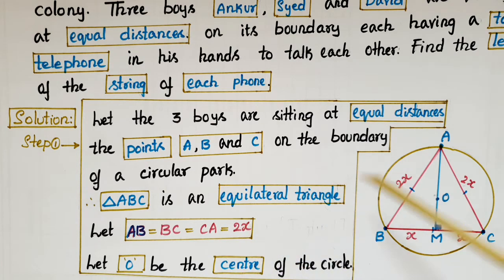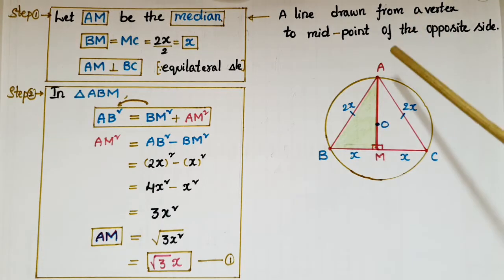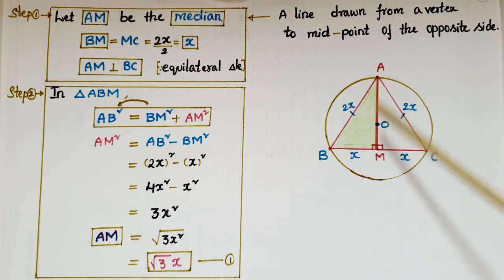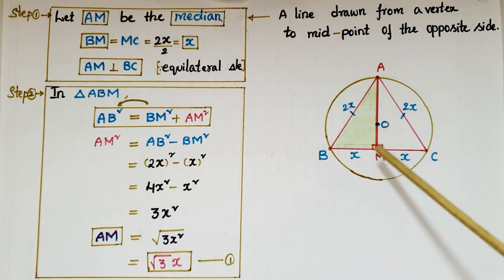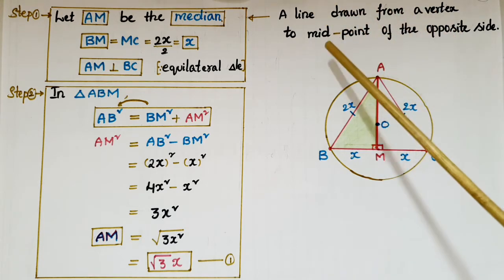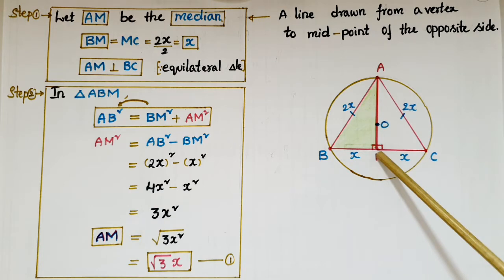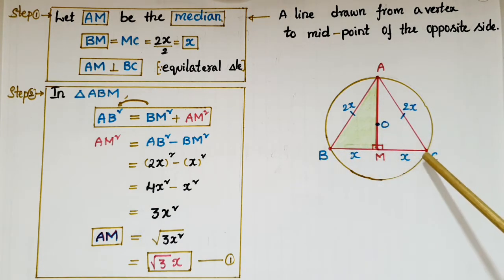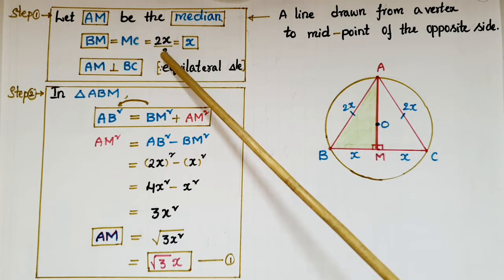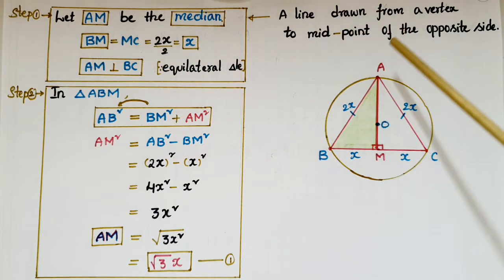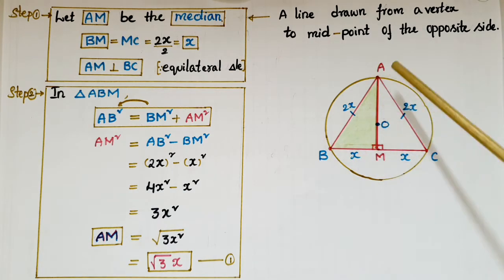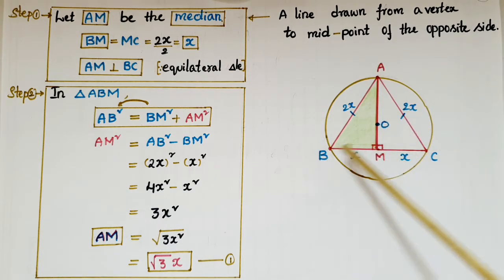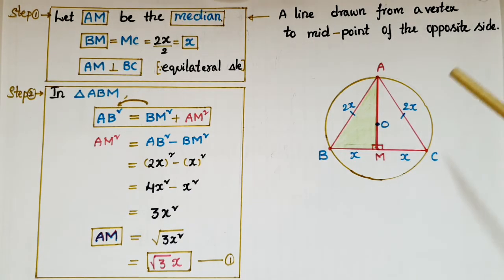Let the center of the circular park be O. Now draw a median from vertex A to the opposite side BC — that is, AM. A median is a line drawn from a vertex to the midpoint of the opposite side, so M is the midpoint, meaning BM = MC = x, since BC = 2x. Because this is an equilateral triangle, all sides are equal, so the median AM is perpendicular to BC.